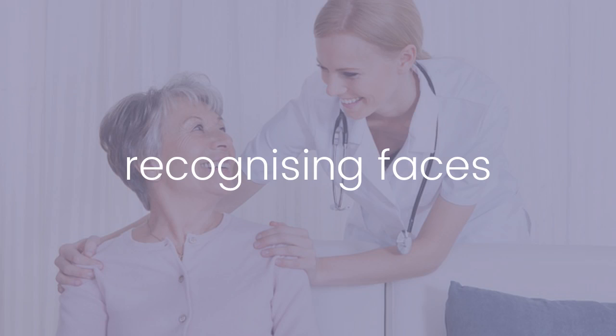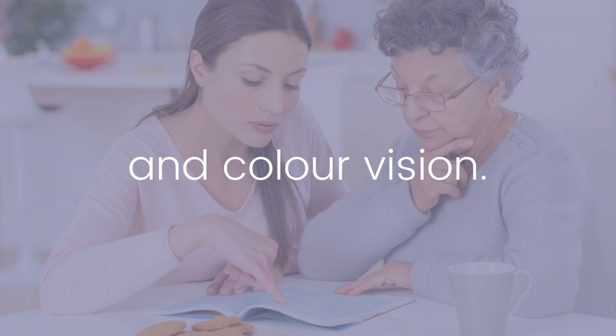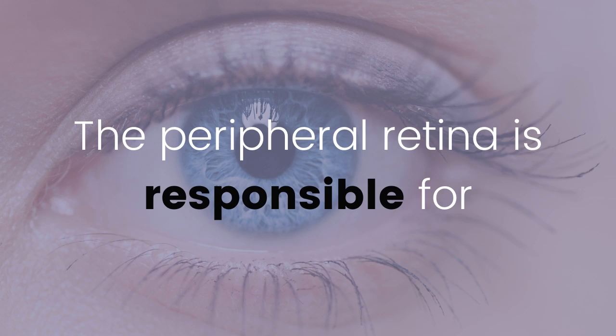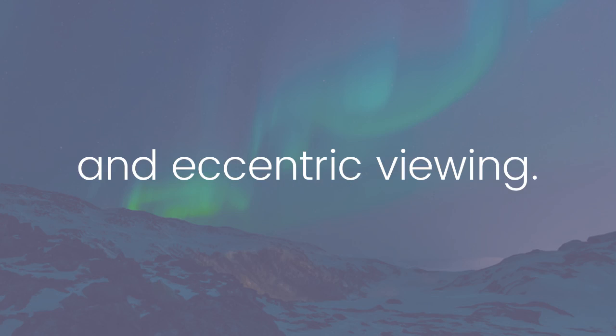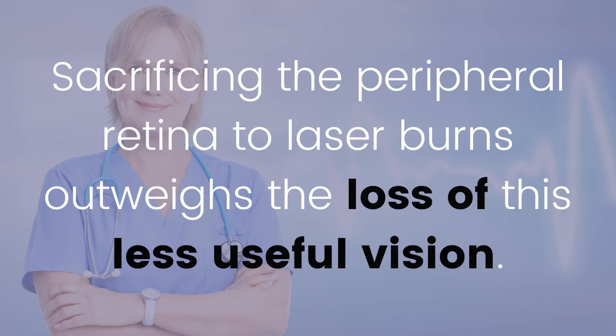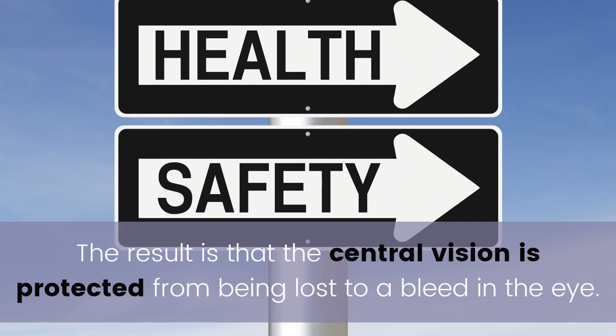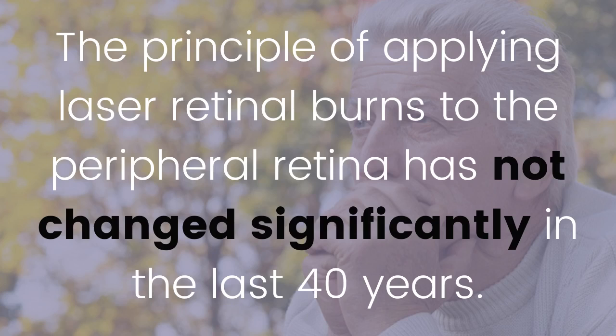The central retina is responsible for recognizing faces and color vision, while the peripheral retina is responsible for night vision and eccentric viewing. Sacrificing the peripheral retina to laser burns outweighs the loss of this less useful vision. The result is that the central vision is protected from being lost to a bleed in the eye.